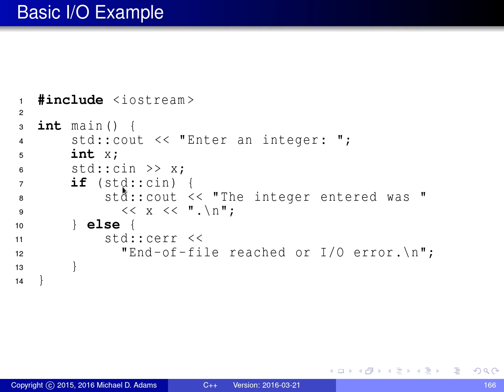After reading, we check for IO errors by using the cin variable in a Boolean context. This will evaluate to true if no IO errors or other problems occurred on the stream, and false otherwise. If we go inside the if branch, it means we successfully read the integer value into x, and we write a message to standard output saying what integer was entered, followed by a newline. In the else branch, an error occurred on cin, so we write a message to cerr saying end of file was reached or there was an IO error.